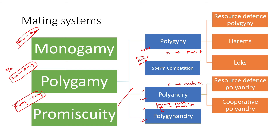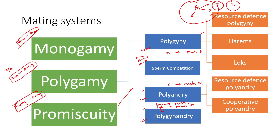Apart from sperm competition, polygyny can involve different situations. Resource defense polygyny is where females come associated with particular resources — it could be a particular area, presentation of brood, or particular characters. When a male controls that group of females, it is also gaining a larger territory and multiple resources, since each female is associated with resources.